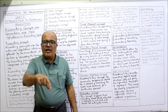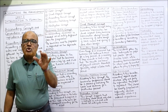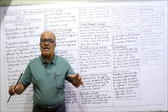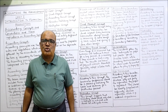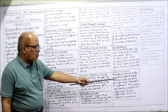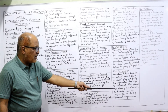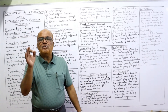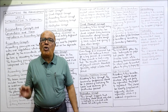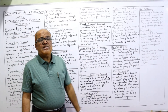Next is the convention of full disclosure. According to this convention, all material items, events, and transactions occurring in the business should be completely disclosed in the financial statements — nothing should be hidden. Accounting reports should disclose fully and fairly the information they purport to represent, be honestly prepared, and sufficiently disclose all information of material importance.